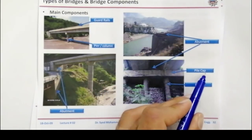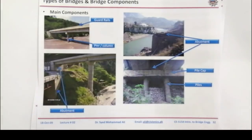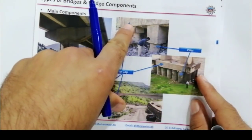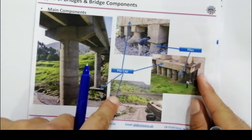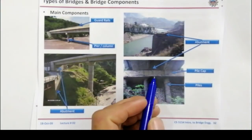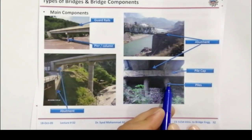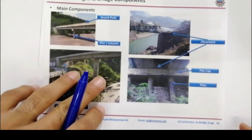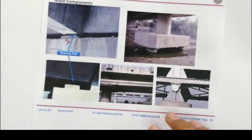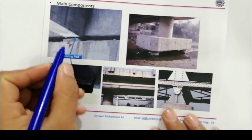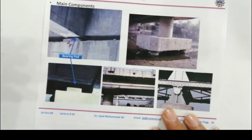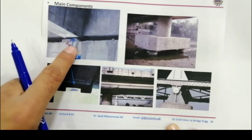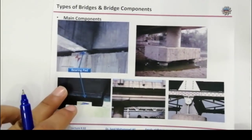I have already discussed the pile cap in the first picture. This is called a pile cap, this is also a pile cap, and this is a pile. Now you can see this is a bearing pad. These are called bearing pads — an important main component of the RCC bridge.